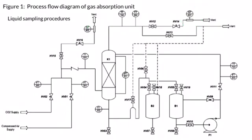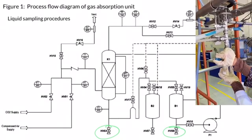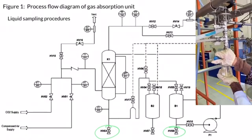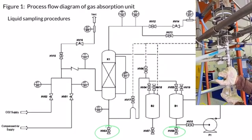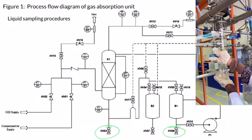Liquid sampling procedures: Samples can be taken from liquid entering and exiting the absorption column. Sampling valves are located at HV03 for the inlet liquid and HV03 for the outlet liquid from absorption column K1. To collect a sample: first, drain any stagnated liquid above the sampling valve; place a vial below the sampling valve; open the sampling valve and collect about 150 ml of sample; then close the sampling valve.